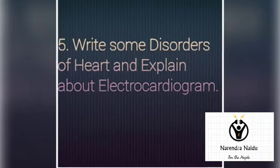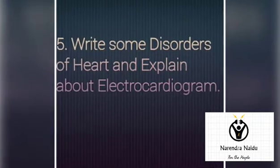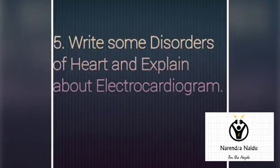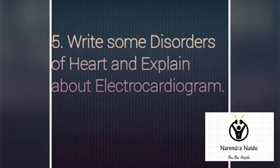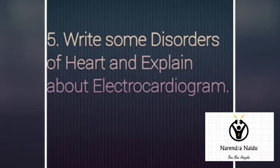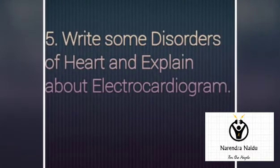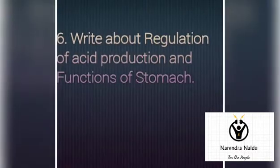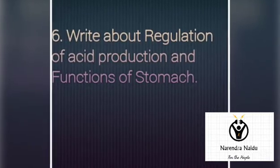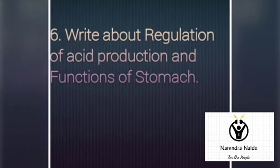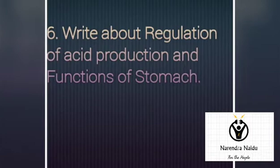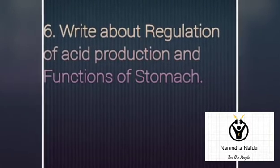The fifth question is: write some disorders of the heart and explain about electrocardiogram (ECG). The next question is: write about regulation of acid production — how acid production can be regulated.